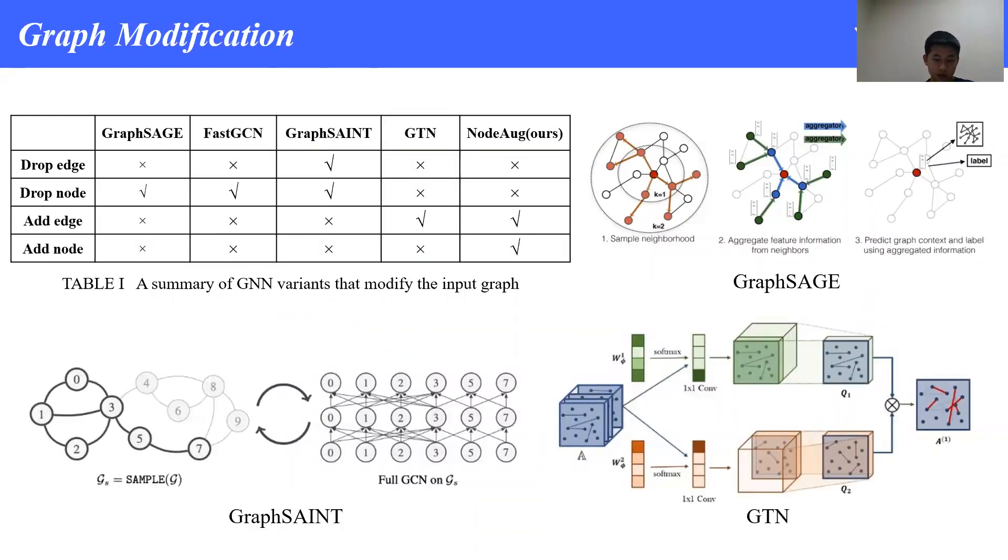To boost performance, various GNN variants have been proposed. Some modify the input graph by drop-edge, drop-node, or add-edge. Table 1 on this page summarizes some of these algorithms. For example, GraphSAGE and FasterGCN sample nodes only, GraphSAINT samples both nodes and edges to reduce time complexity, while GTN compresses meta-paths into new edges in heterogeneous graphs. Our NodeAug focuses on node classification problems and tries to improve accuracy. It adds new nodes and edges by adopting mixup into graph data.